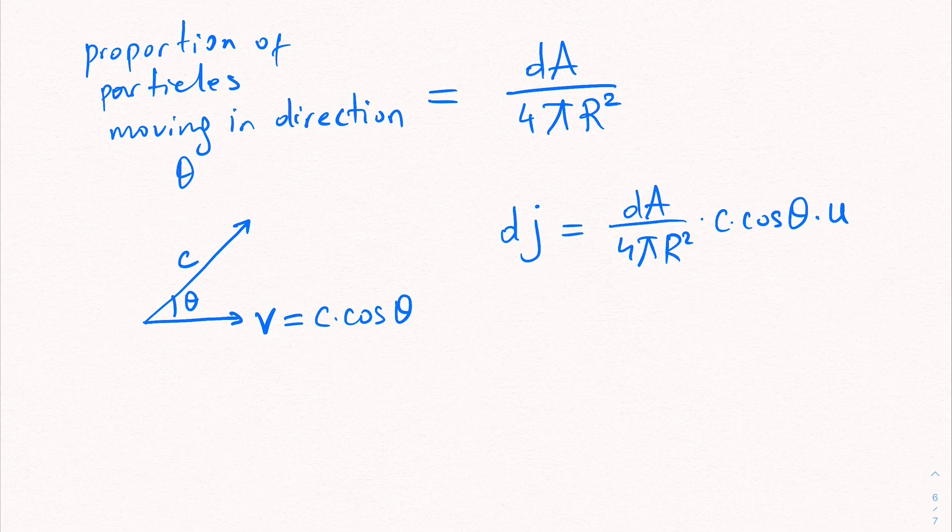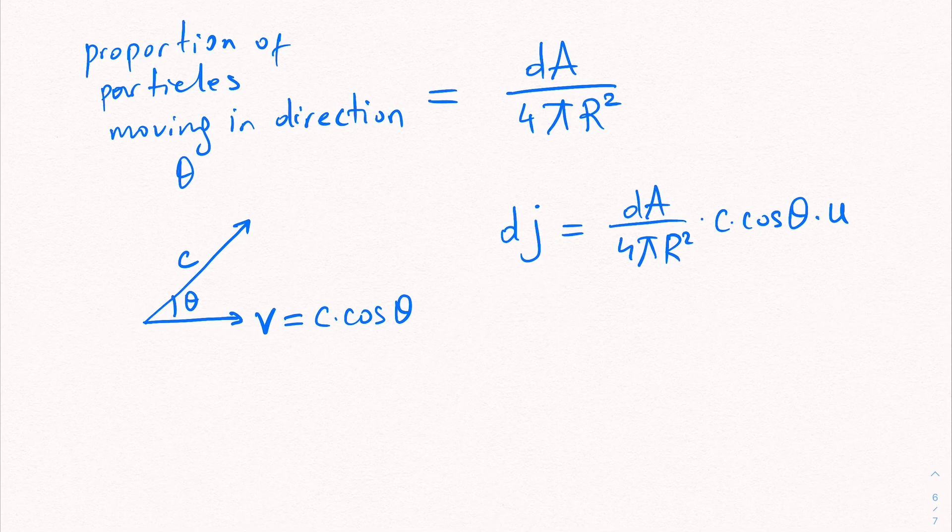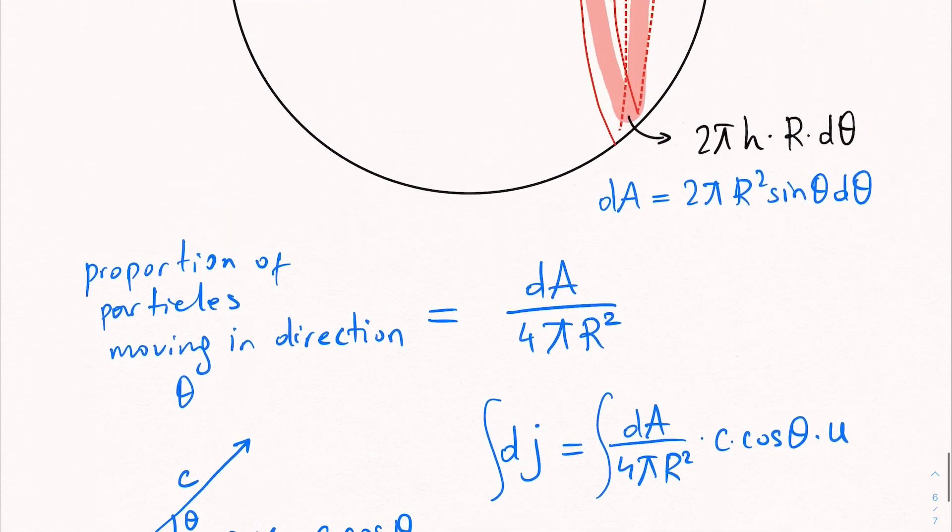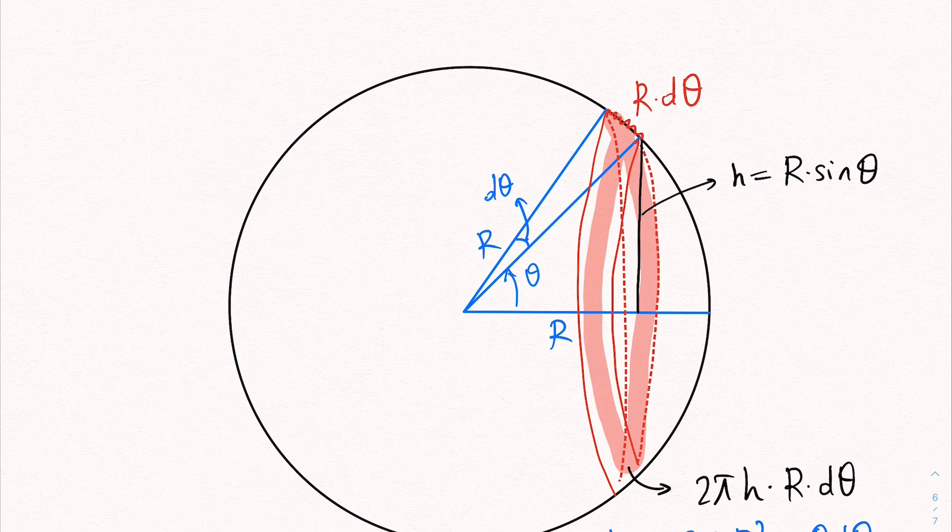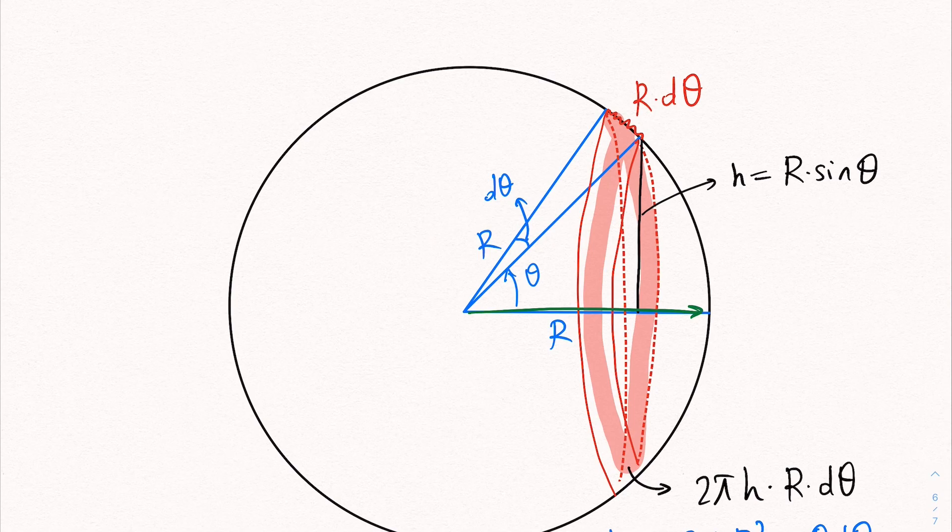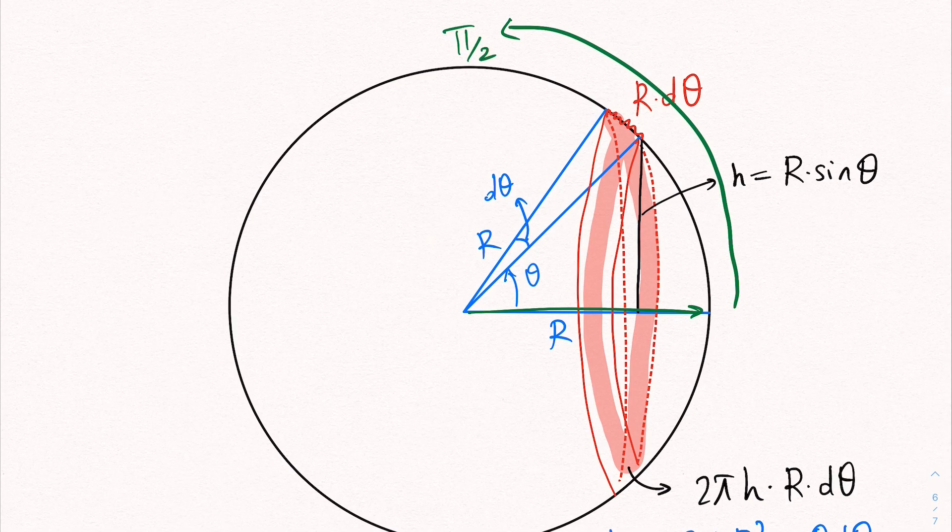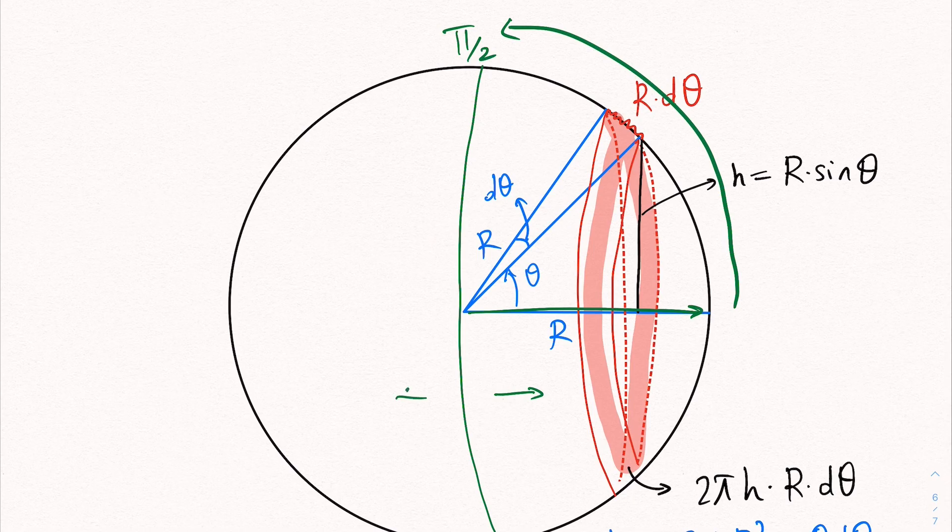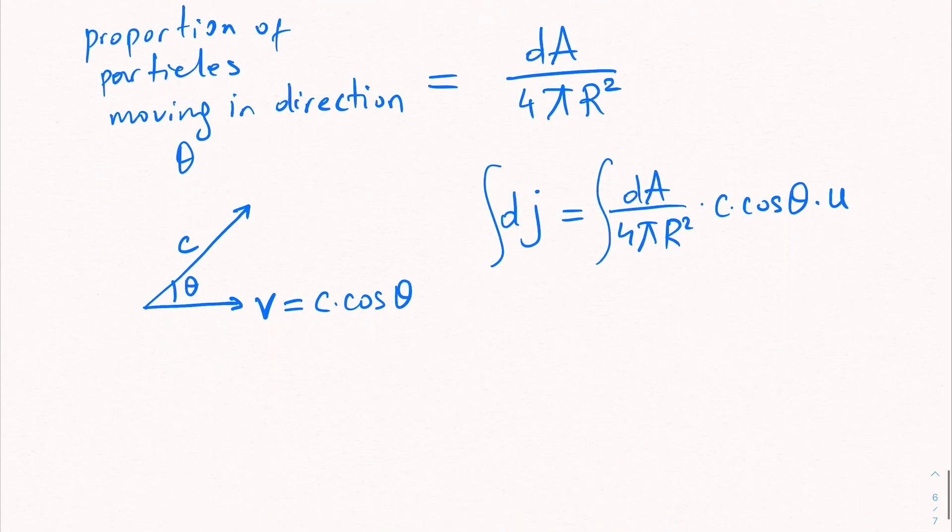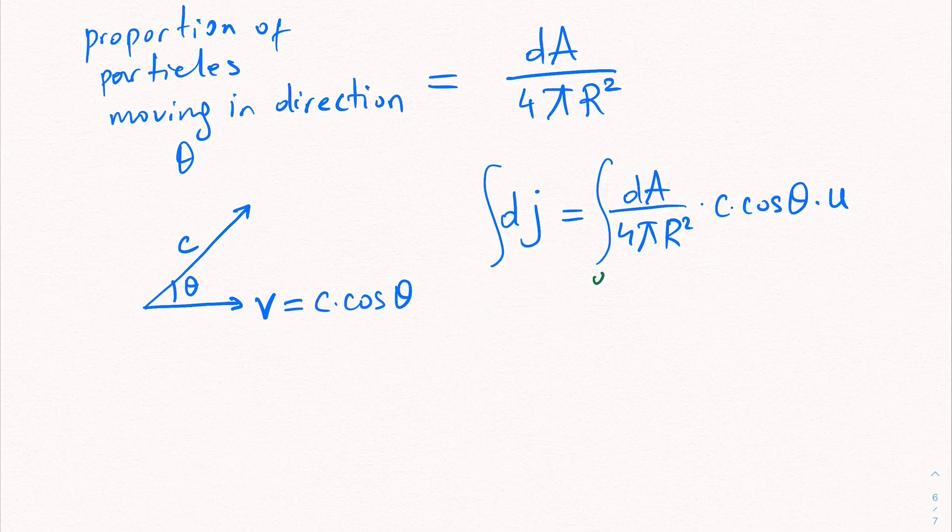Now we can find the total number of particles or the total flux by integrating this. But what are the bounds of integration? Now notice that we go from, if we take theta to be 0, it goes in this direction. But as you increase theta to up to pi over 2, you cover basically all the particles that are moving towards right. After pi over 2, they are the ones that are moving to the left. So we need to take this integral from 0 to pi over 2.